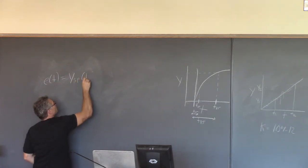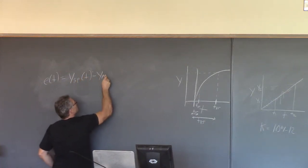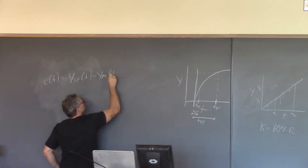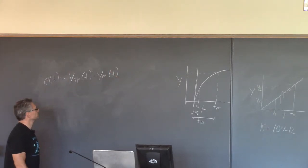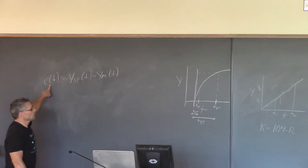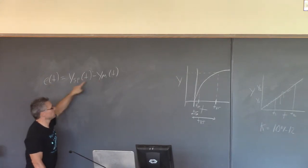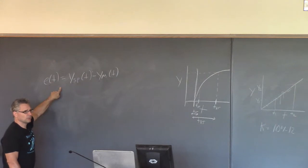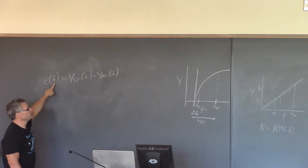The set point, the desired value, and the measurement are all a function of time. The controller is trying to make this error zero, because if the error is zero, that means your measurement is equal to the set point. That's what you want. So the goal of the controller is to try to drive this error to zero.